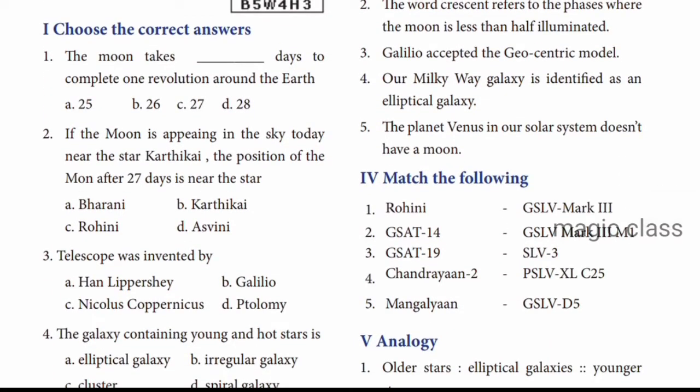Choose the correct answer. Question number 1: The moon takes dash days to complete one revolution around the earth. The moon takes how many days - the answer is Option C, 27 days.